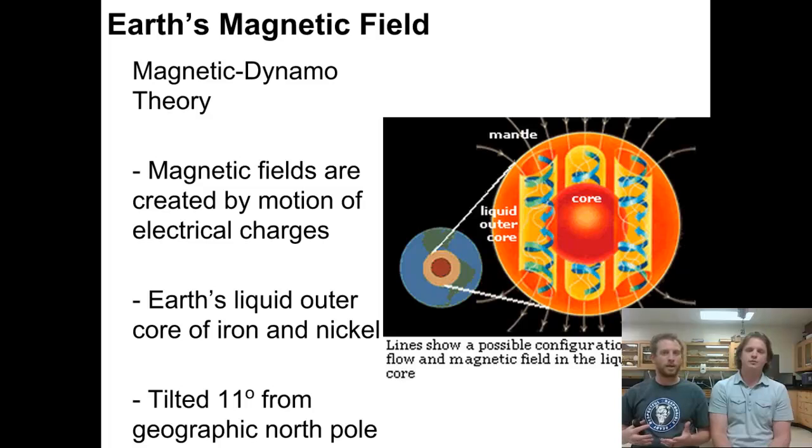There's a leading theory present that's the magnetic dynamo theory, which helps us try and figure out why Earth has a magnetic field. Because our moon doesn't have a magnetic field, and Earth is pretty special that we do. They think that the magnetic fields are created by moving electrical charges.